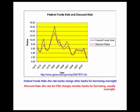As you can tell from this graph, the discount rate tended to lie below the federal funds rate, which is the rate that banks charge other banks for borrowing money overnight.